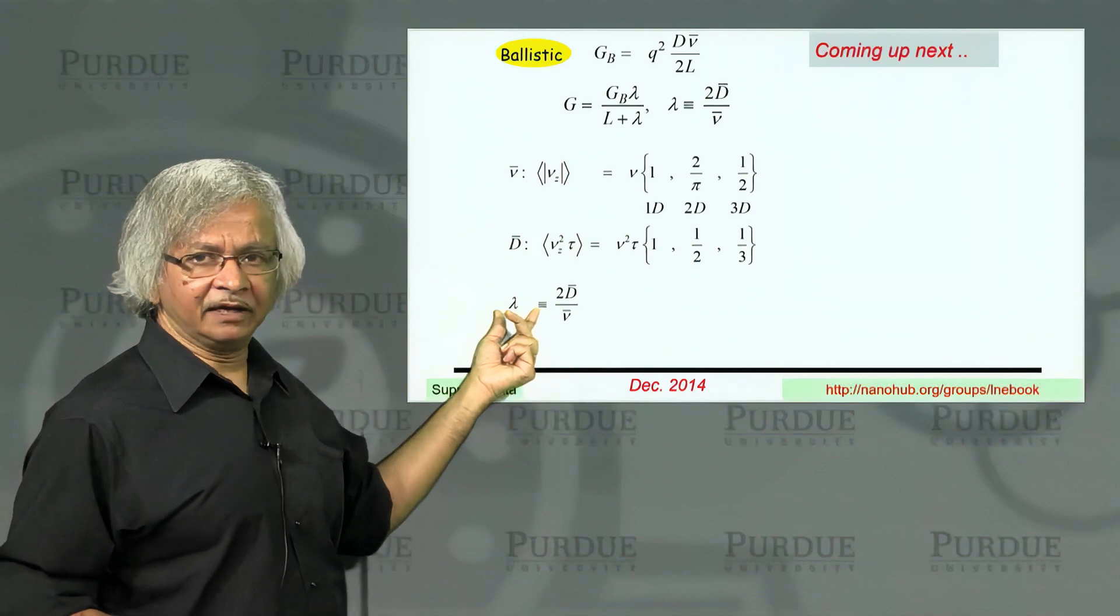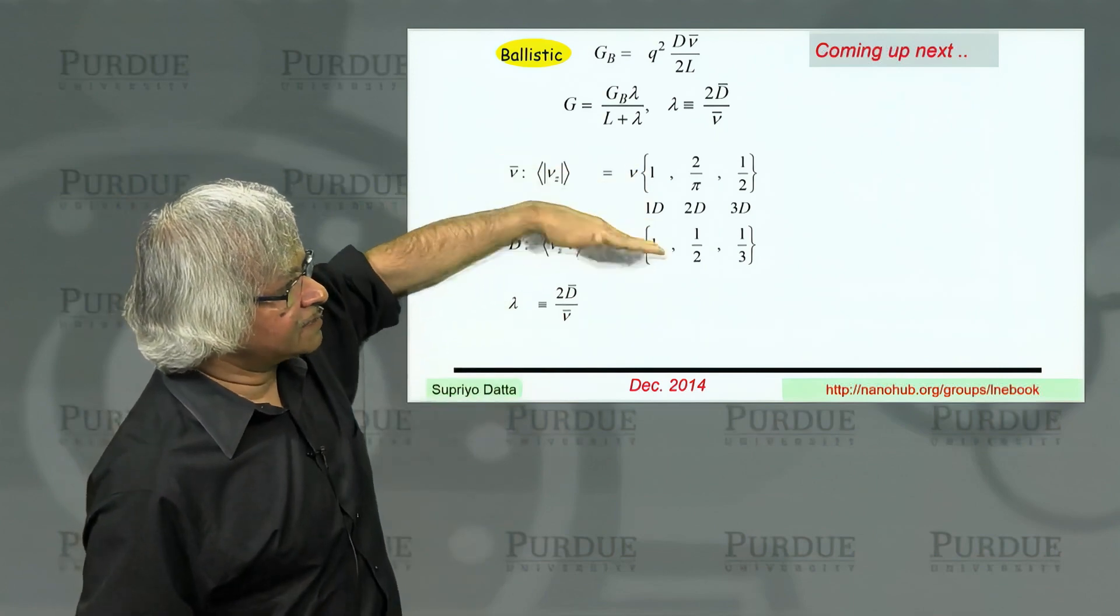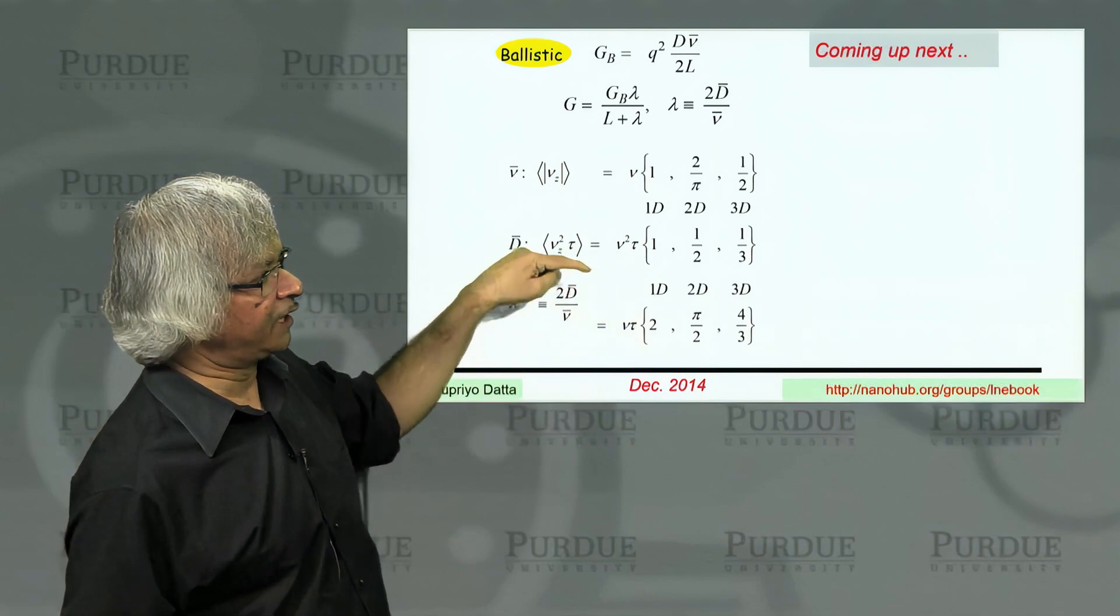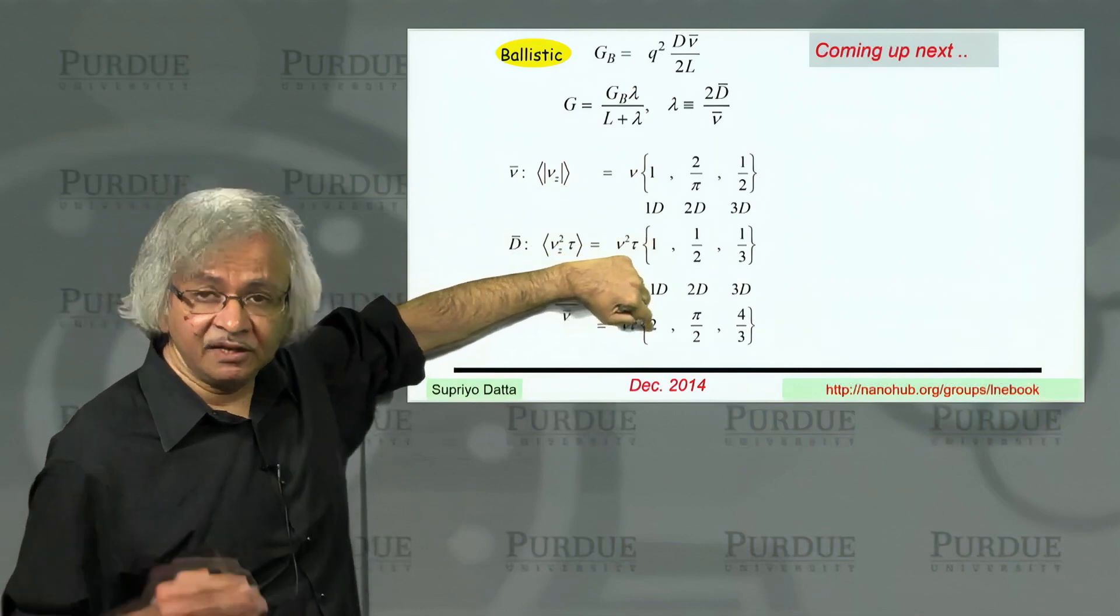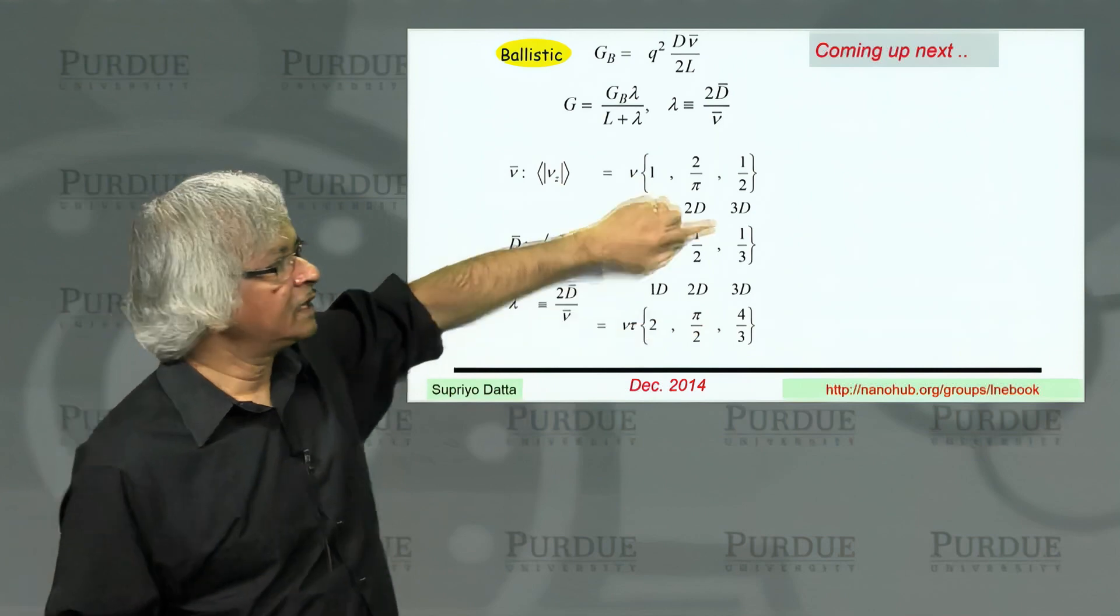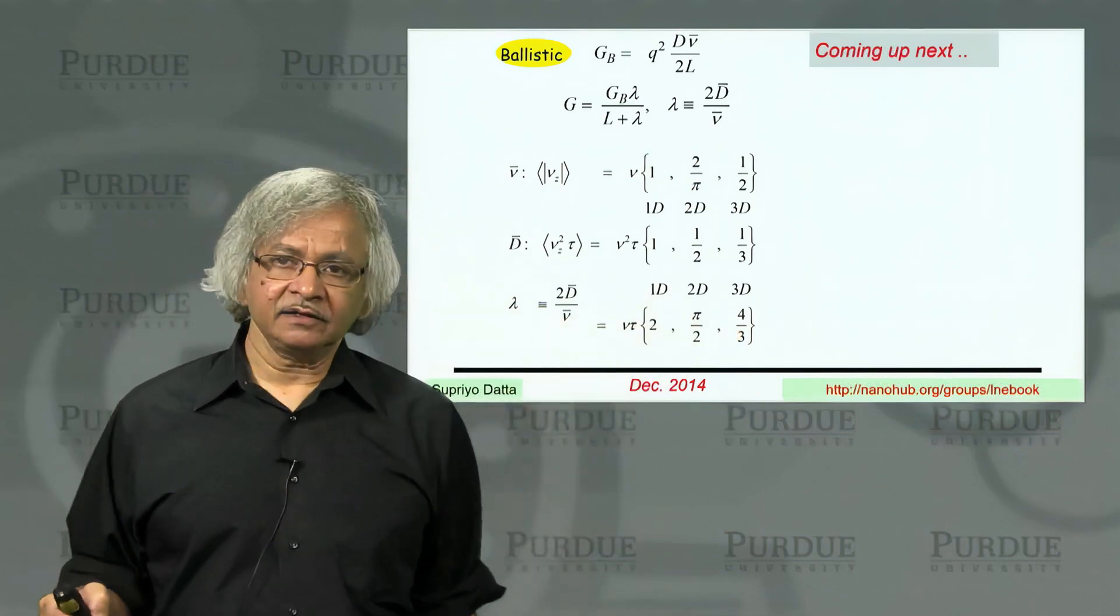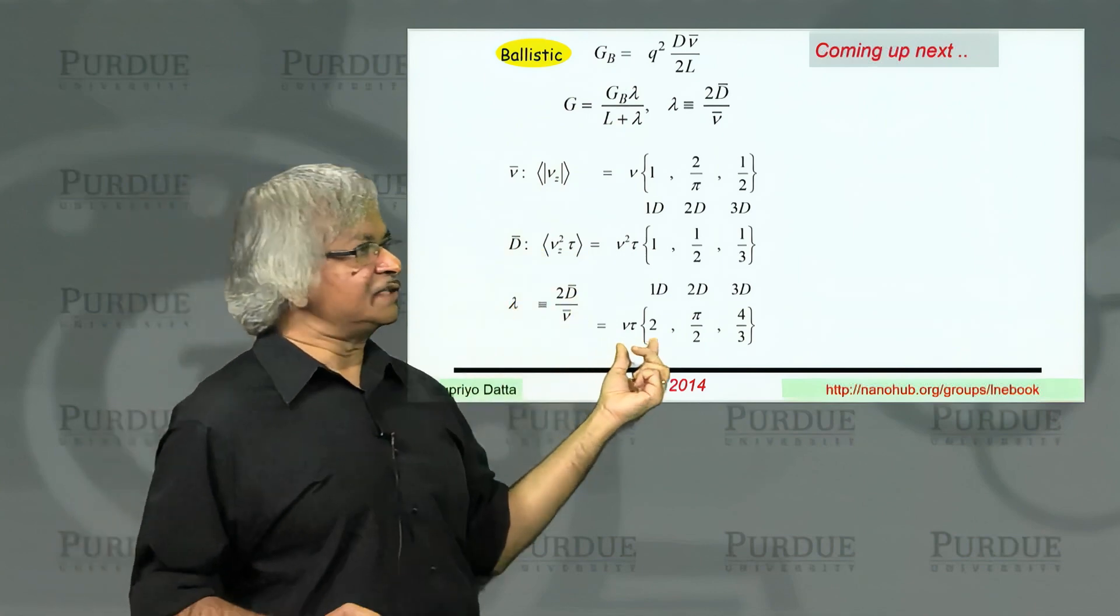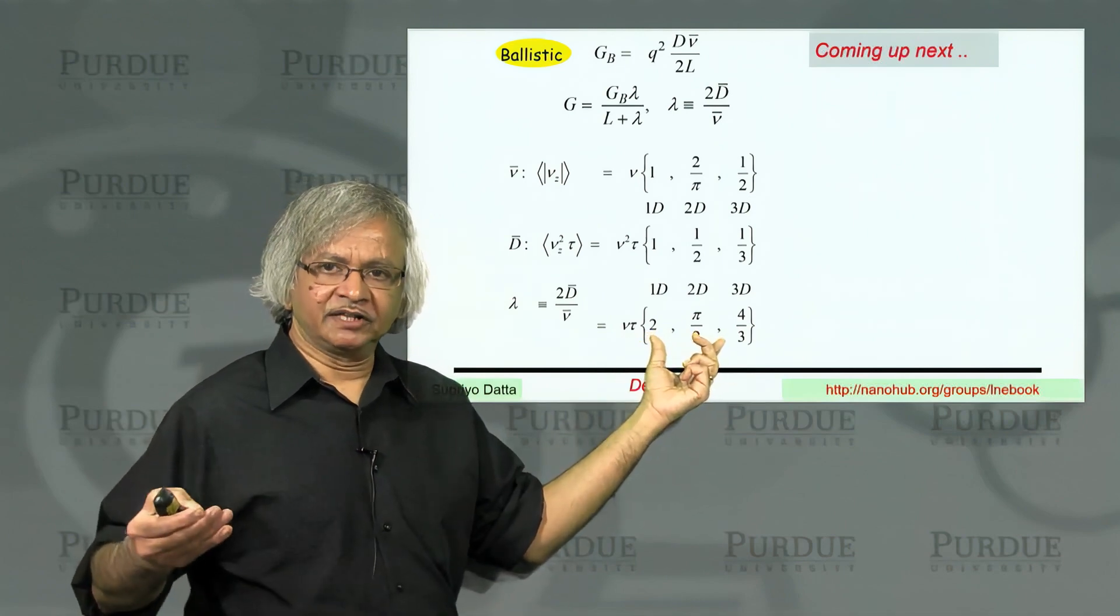And now if you look at the way we define lambda as 2 times the diffusion coefficient over velocity, you can see what you'll get. When you divide this by this, if it was v square tau divided by v, that's what gets you the v tau. And the numerical factor in each case you can try out. It's like 2 times this divided by that. So for 1D you get 2 like we had discussed before. That's this mean free path for backscattering that I had mentioned. 2 times this is 1 divided by 2 over pi. That's what gives you pi over 2. 2 times this is 2 thirds divided by half. That's what gives you the 4 thirds.